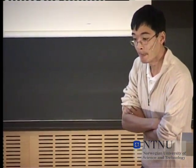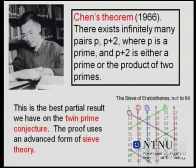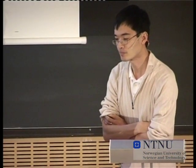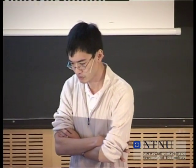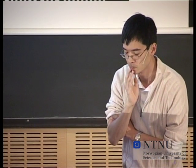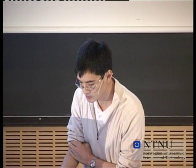I mentioned the twin prime conjecture, which is that there should be infinitely many pairs of numbers p, p+2 which are both prime. We can't prove that, but we can come in some sense very close. We have Chen's theorem — the great Chinese mathematician Jin Rong Chen showed that there are infinitely many pairs p, p+2 where p is a prime and p+2 is an almost prime, meaning it's either a prime or the product of two primes. There's a reason why you can't go beyond that — something called the parity problem, which is a major problem in number theory. To break this would be a major achievement, but this is the best we can do with current technology.